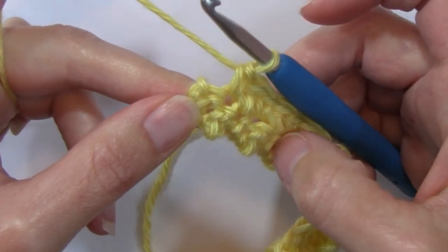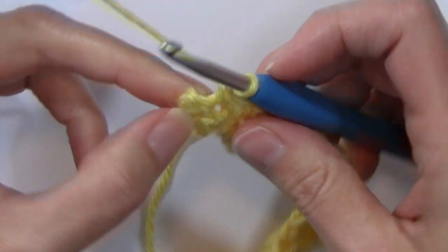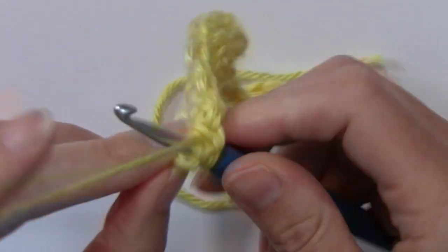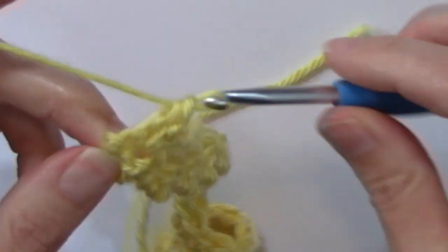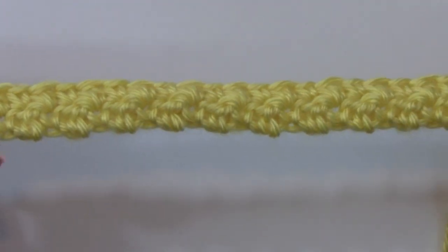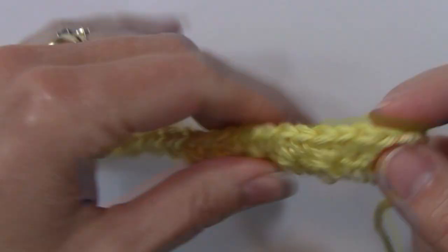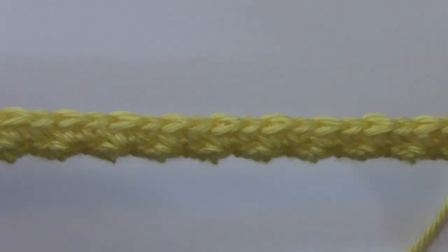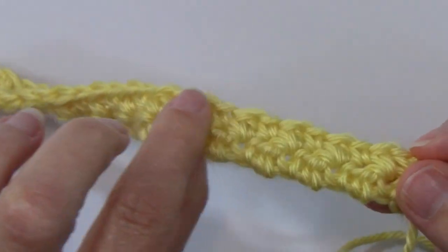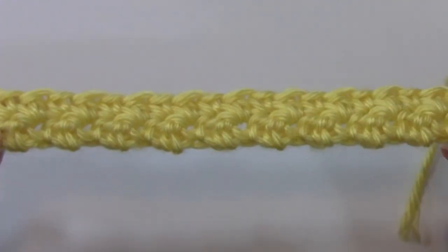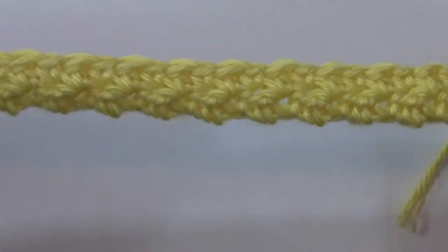So when we get to the end of this row, again, our final stitch is going to be a double crochet in that last stitch. And so you can see how beautifully textured this is, and it's building on both sides now, and it's creating this gently textured fabric that just really pops with just simple crochet stitches.